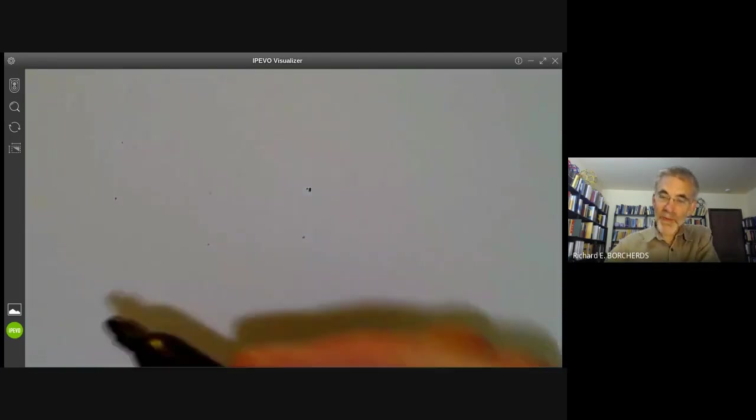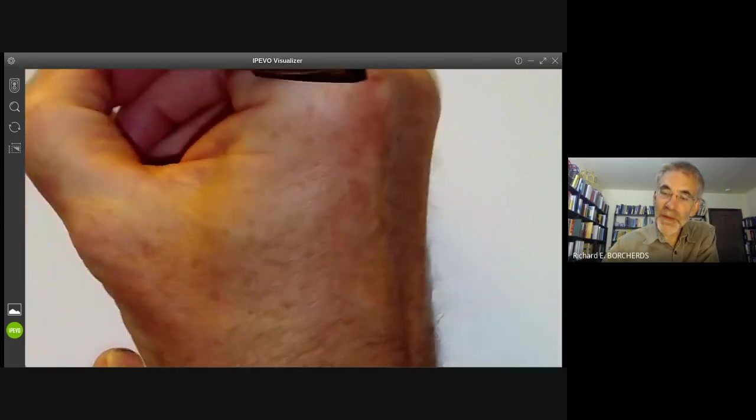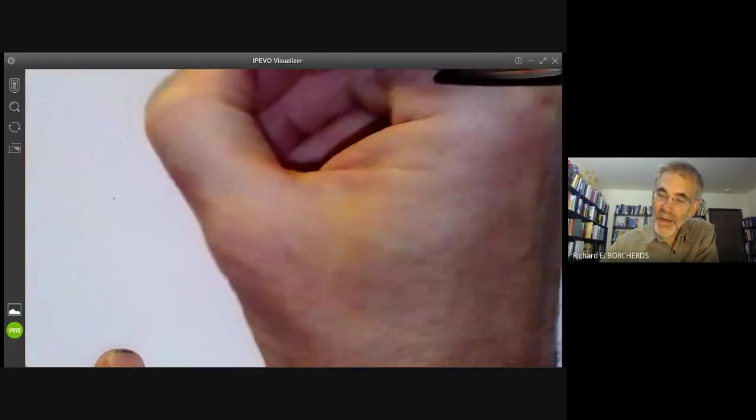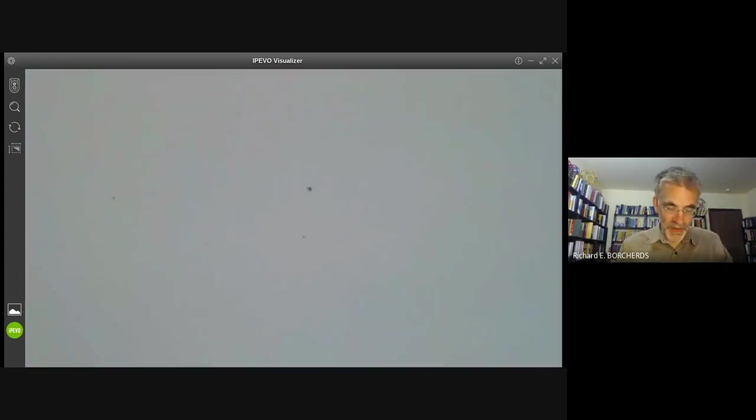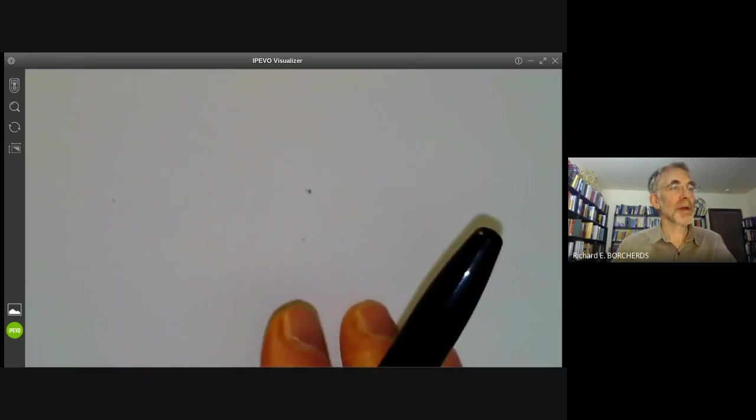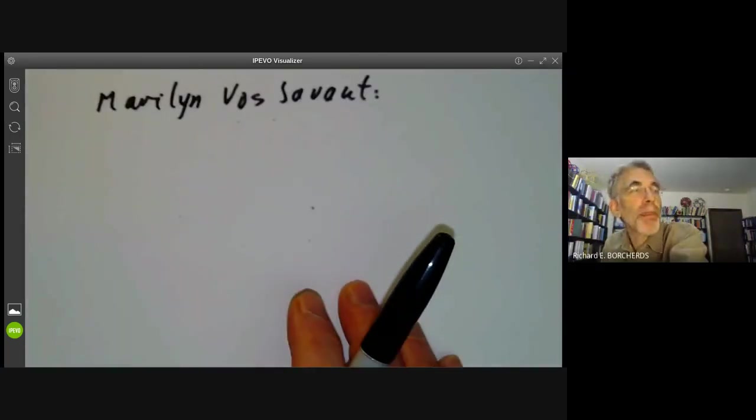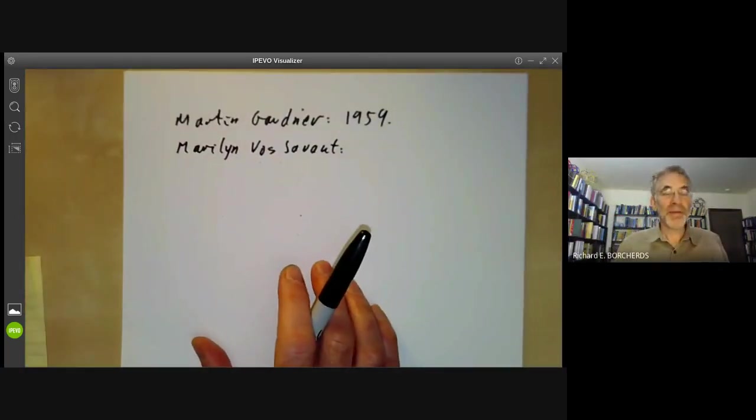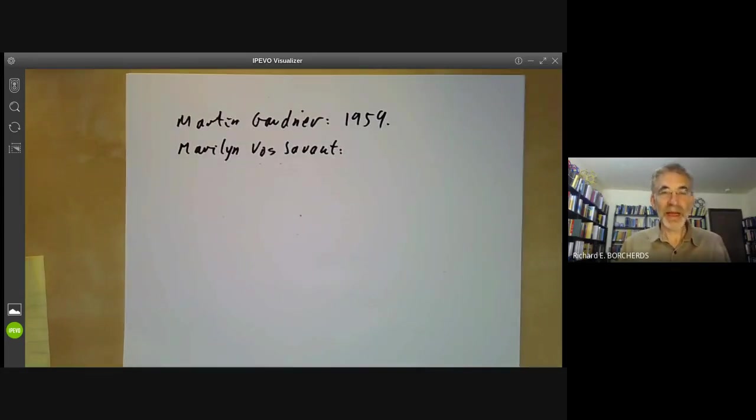The problem became really popular when it appeared in a newspaper column by Marilyn Vos Savant, who again gave the correct answer. What is rather interesting about this is, Marilyn Vos Savant received enormous numbers of letters from professional mathematicians, basically most of which said something along the lines of, I'm a professional mathematician with the brain the size of the planet and your solution is completely wrong. And most of the mathematicians who wrote to her were in fact wrong. So this is a really tricky problem. Even professional mathematicians get the answer wrong.